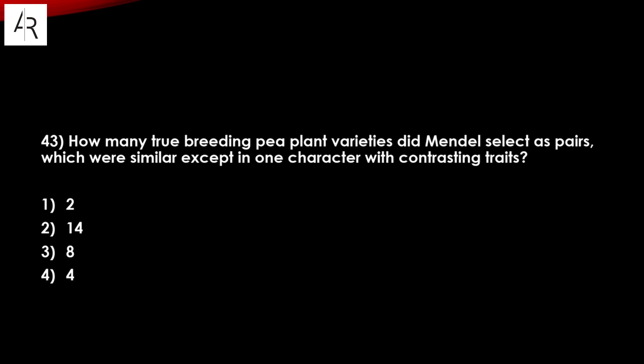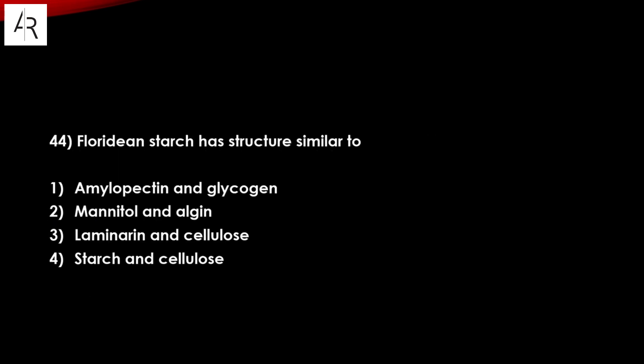Question number forty-three: how many true breeding pea plant varieties did Mendel select as pairs which were similar except in one character with contrasting traits? Option number two — 14 — is the answer. If the answer were 7 you might be confused, but it is 14 pairs. Question number forty-four: Floridian starch has a structure similar to amylopectin and glycogen — option number one is the answer.